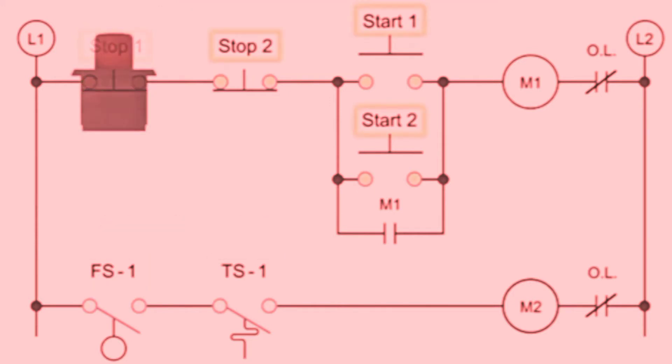Manually controlled components require physical manipulation to work. Automated components turn on and off without manual intervention. A typical example is a float switch found in a sump pump.